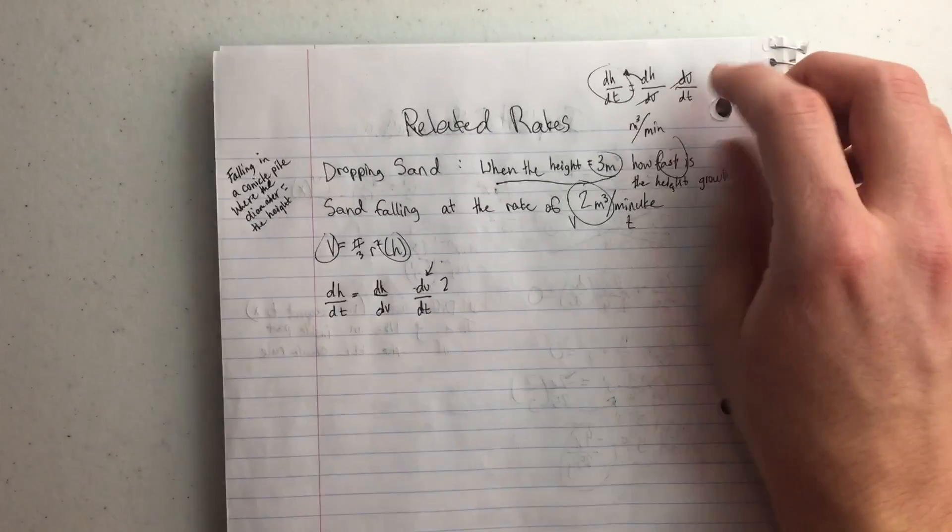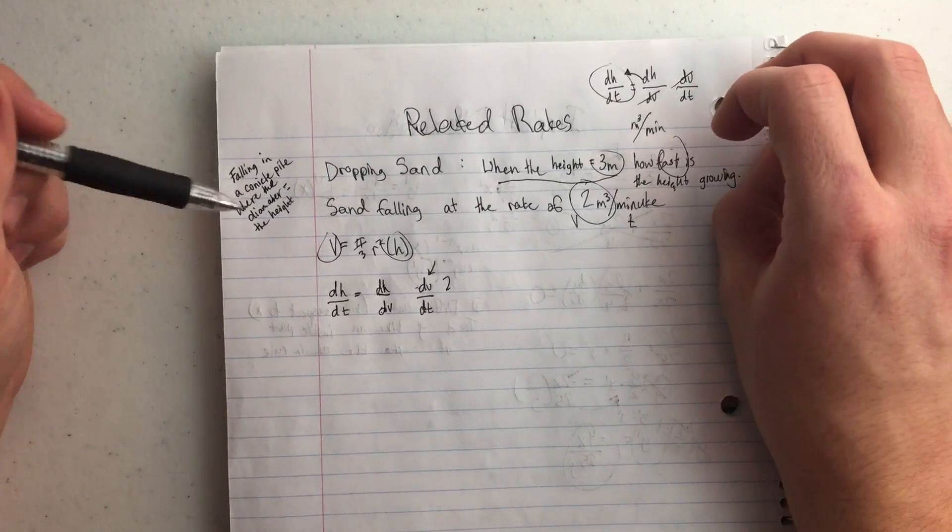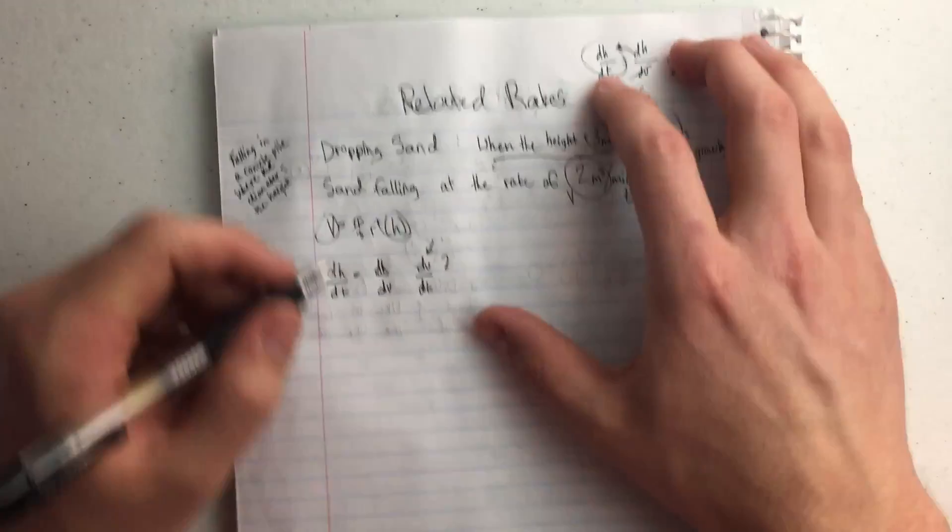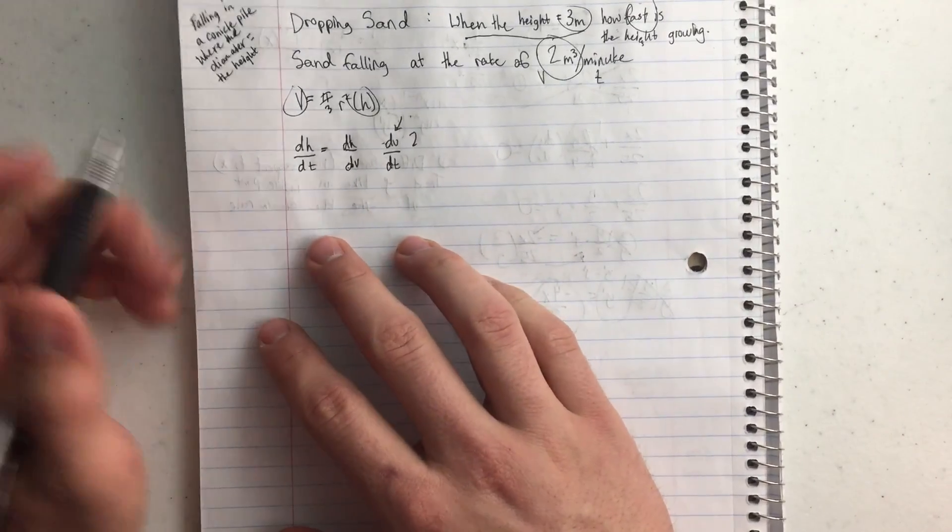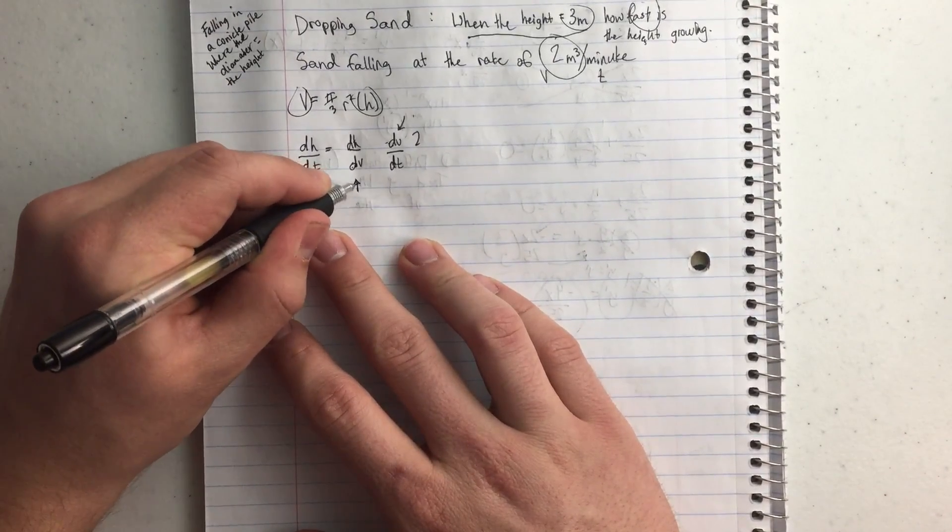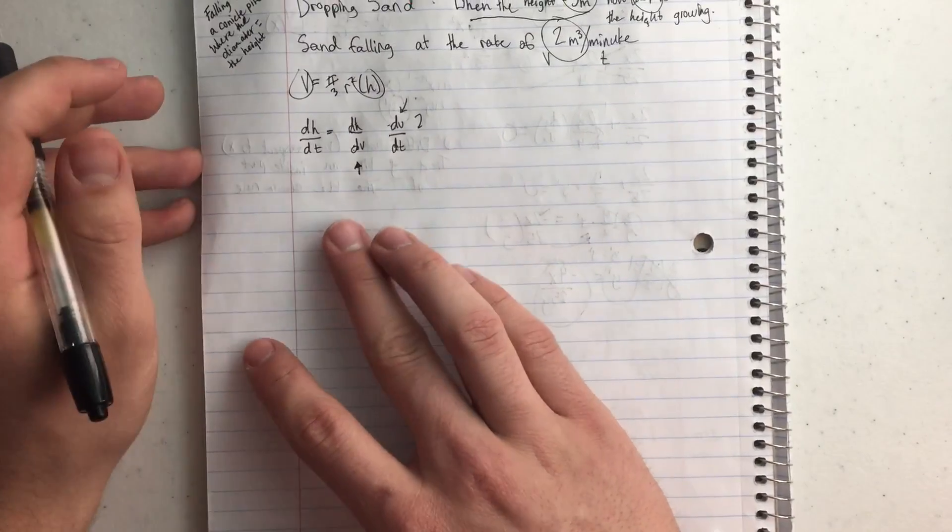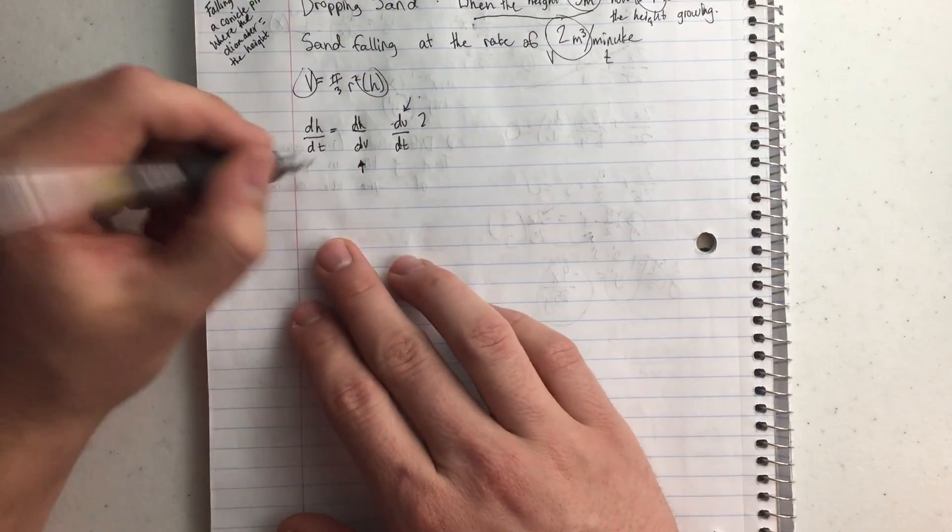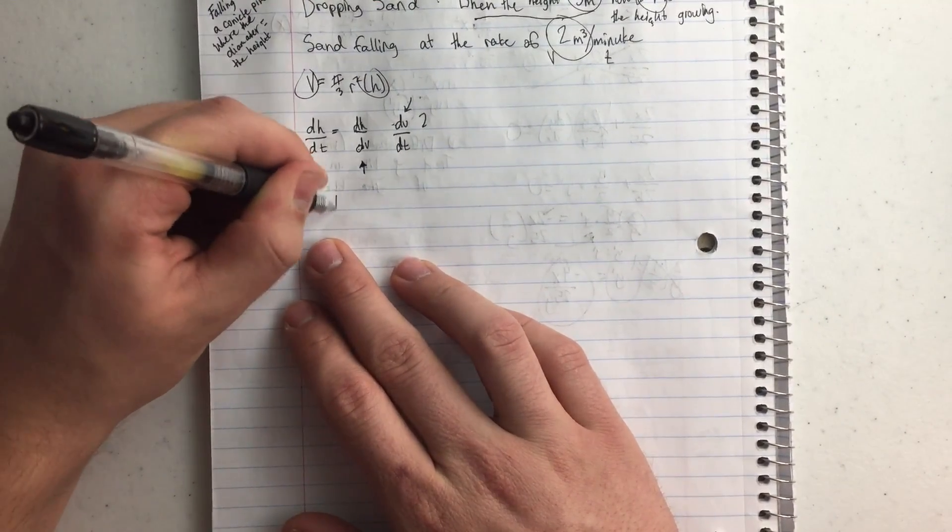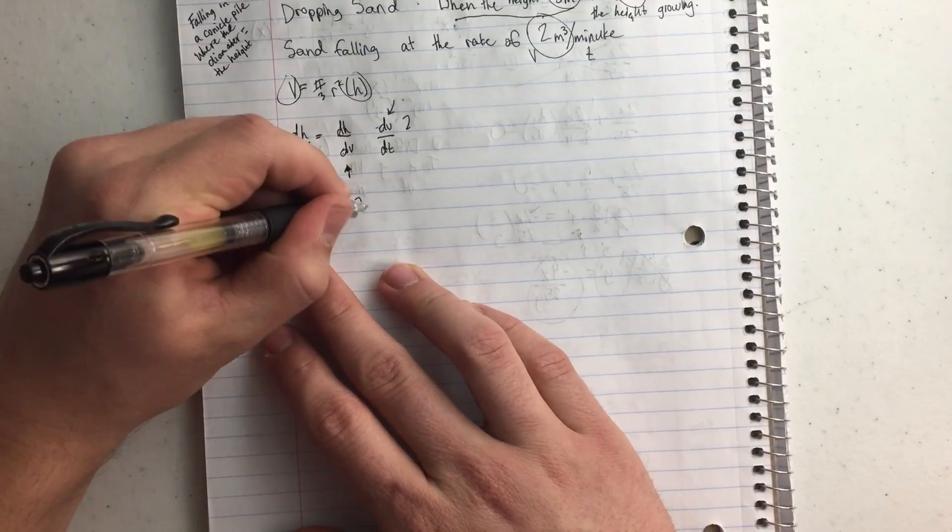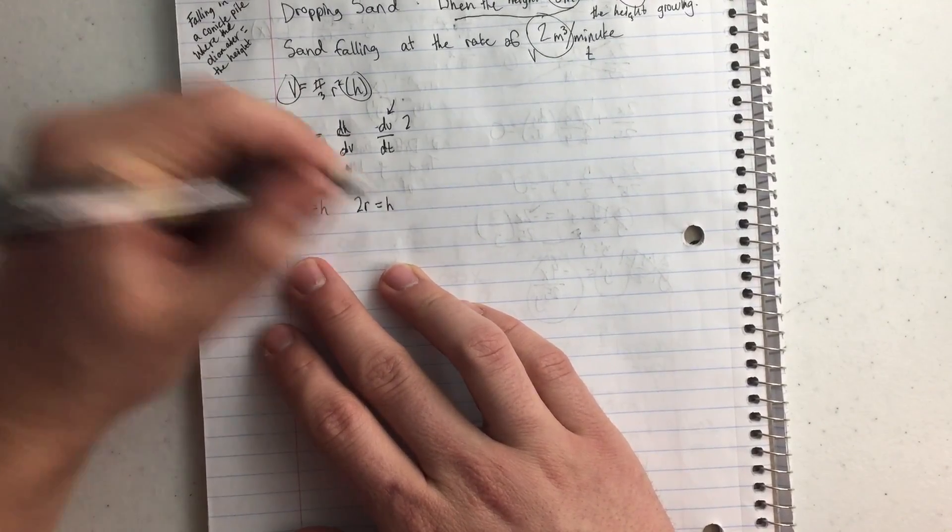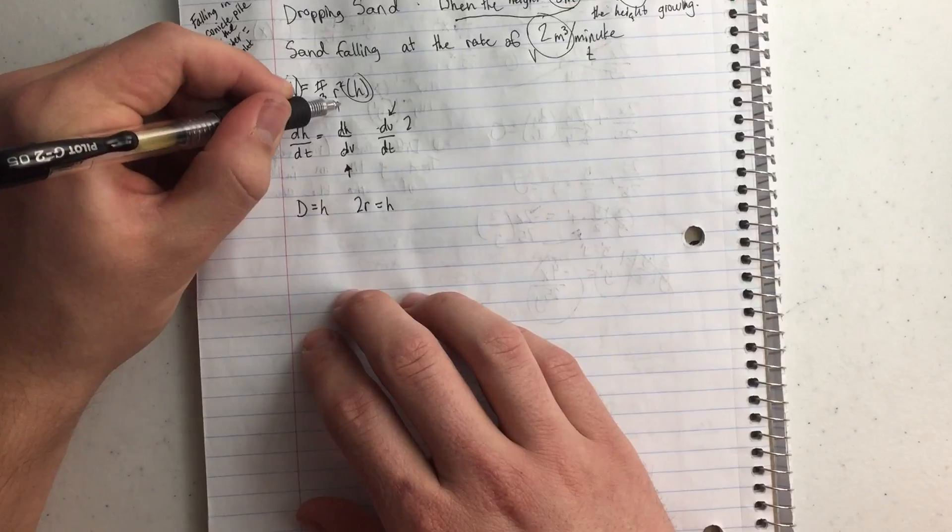and in this note right here, it says the sand is falling in a conical pile where the diameter equals the height. So here's the math I'm going to do to get this equation, and then we're just going to do the math and get our answer super easy. So, because the diameter equals the height, 2 times the radius equals the height, because I have my r in this equation.